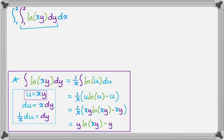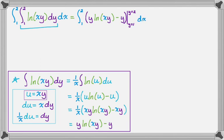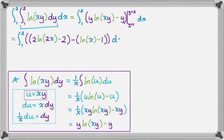Now complete the inner definite integral from y = 1 to y = 2. I like to specify which variable I'm substituting since there are two variables. Applying the Fundamental Theorem: plug in y = 2, so all y's become 2s, then subtract the result of plugging in y = 1, which gives natural log of x minus 1. There's still a dx remaining.